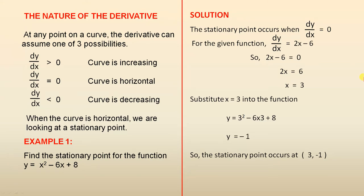For example one, find the stationary point for the function y equals x squared minus 6x plus 8. Now we've seen that the stationary point occurs when dy/dx equals 0. So for the given function, dy/dx equals 2x minus 6. So we'll let that equal 0. We have 2x minus 6 equals 0, therefore 2x equals 6, therefore x equals 3.